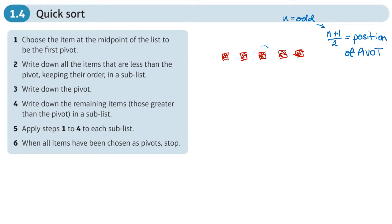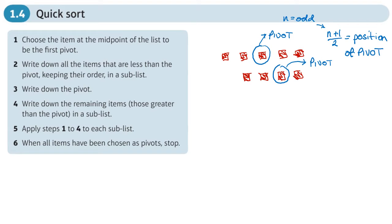The number in that position is called the pivot. If we have an even number of numbers in our list, we choose the number to the right of the center. So if n is even, the pivot position is n plus one divided by two, rounded up to the next whole number.